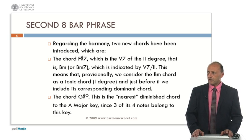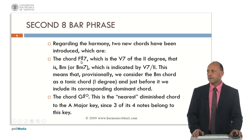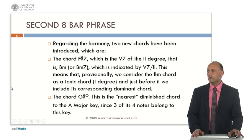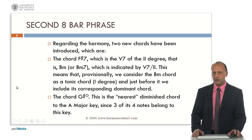As I explained, we introduced two new chords: the F-sharp dominant seventh chord, which is the fifth or dominant of the second degree, which is B minor. This is indicated by V7 over 2. This means that provisionally we consider the B minor chord as a tonic chord of one degree, and just before it we included its corresponding dominant chord.